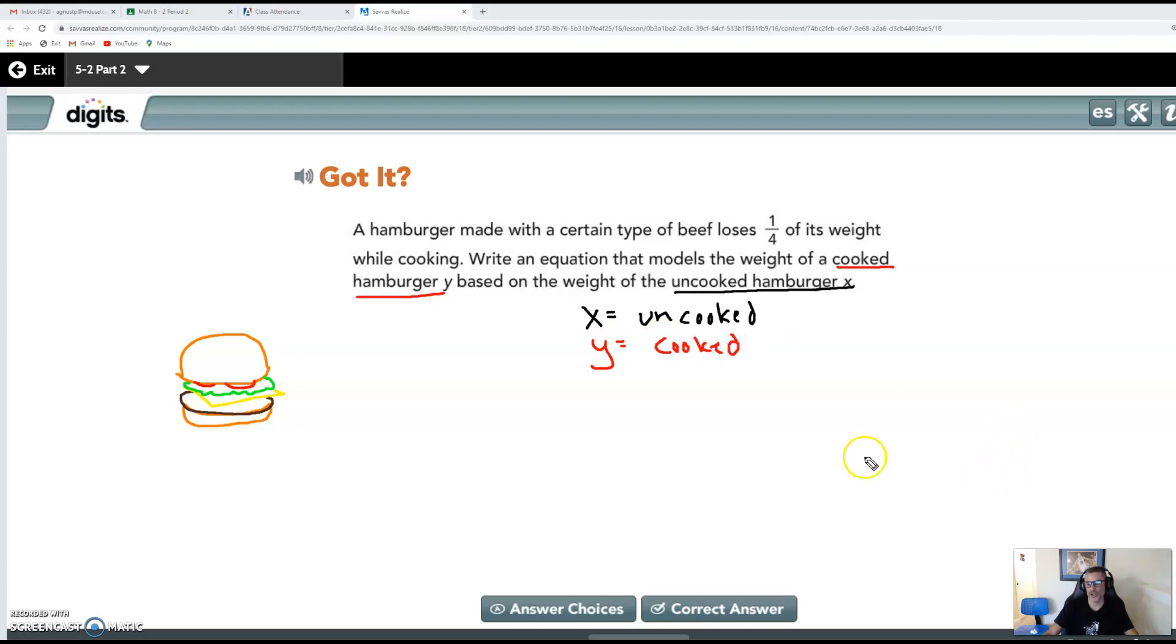So a lot of students are going to want to do something like this. They're going to say, okay, well y is equal to one fourth x. Be careful. It loses one fourth of its weight. So how much of its weight is remaining? If I have a whole, if I have a pizza, and I take away one fourth of it, I have three fourths left. In other words, one whole minus one fourth is equal to three fourths.